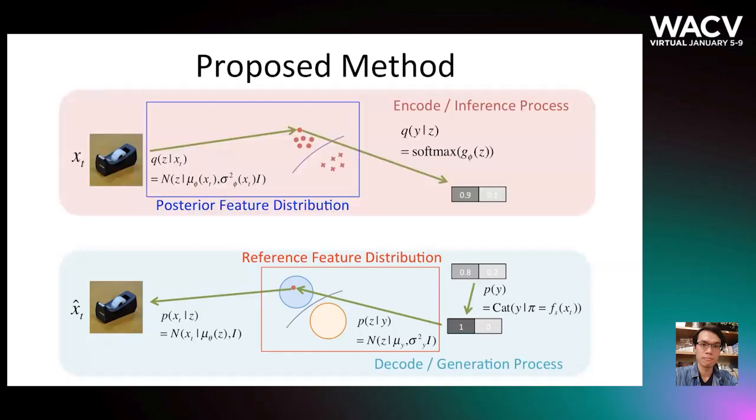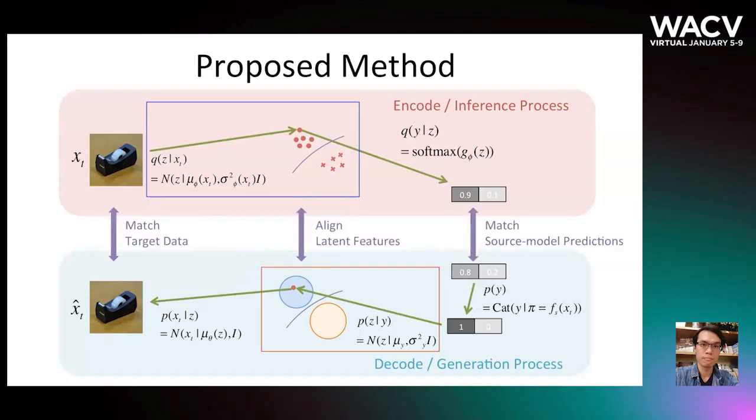On the other hand, the inference process approximates a posterior distribution, which encodes the target data to the adapted predictions. Sample-wise Gaussian distribution is formulated for the posterior feature distribution, depicted with the blue box in the figure. We then achieve domain adaptation by aligning the prior and posterior distributions using variational inference. In addition to matching the source model predictions and target data, we also achieve source data-free feature alignment by aligning the posterior and the reference feature distributions. More details of the proposed algorithm are provided in the paper.